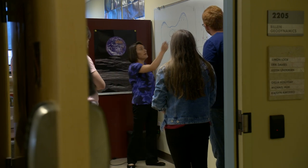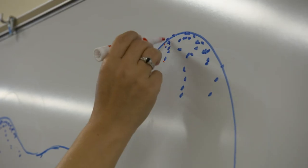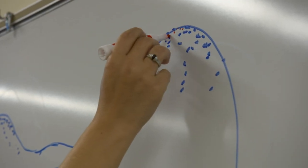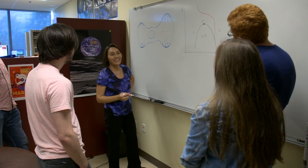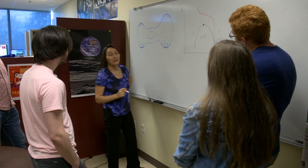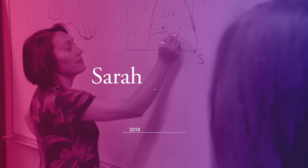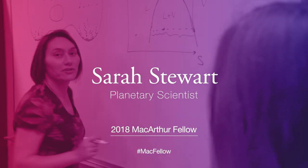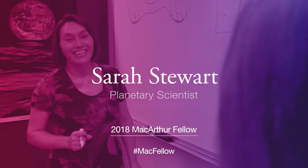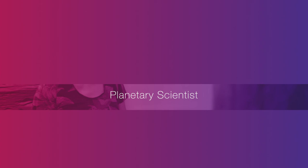I use computer models to simulate planetary scale collisions to understand mysteries about the origin of the Earth and other planets. My name is Sarah Stewart. I'm a planetary scientist at the University of California, Davis. I study how planets form and evolve.